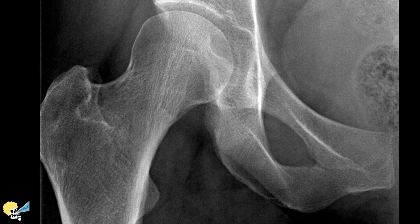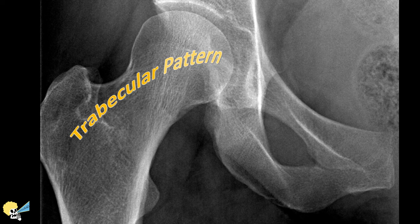Hello there! Let's talk about the trabecular pattern of bone and how it looks in different osseous problems that affect the way the trabecula looks in radiological studies. Trabeculae are delicate, interconnected, lattice-like structures that make up the cancellous bone.